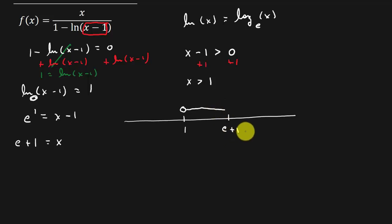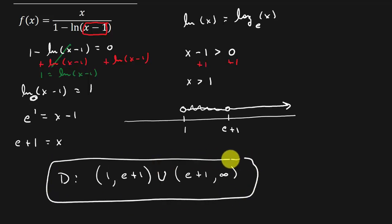And then, remember, it can't be this either because that would give us 0 in the denominator. So we have an open circle there and it goes all the way to infinity. So our domain would be from 1 to e plus 1. That takes care of this part. And then we hop over this and we have e plus 1 to infinity. Let me draw that a little better. And this would be our domain.